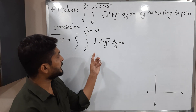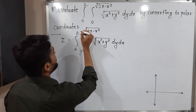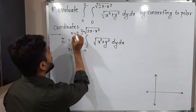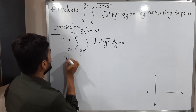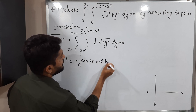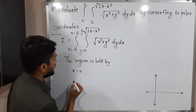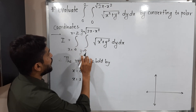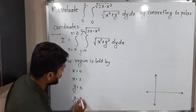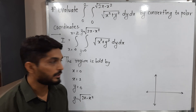The inner integration is with respect to Y, so these are the limits of Y. The outer integration is with respect to X, so these are the limits of X. Therefore, the region is bounded by: X = 0, X = 2, Y = 0, and Y = √(2x − x²).